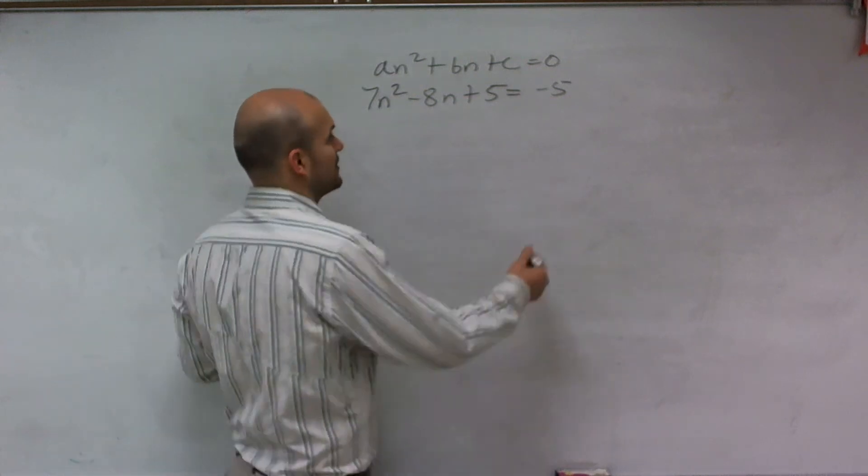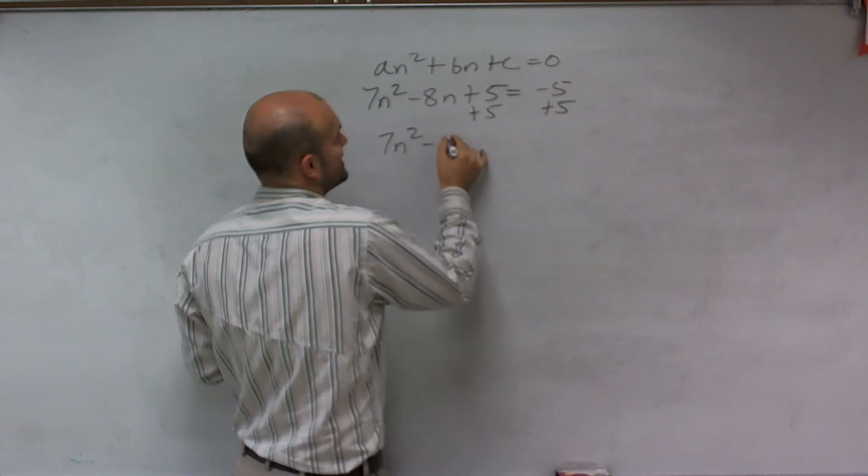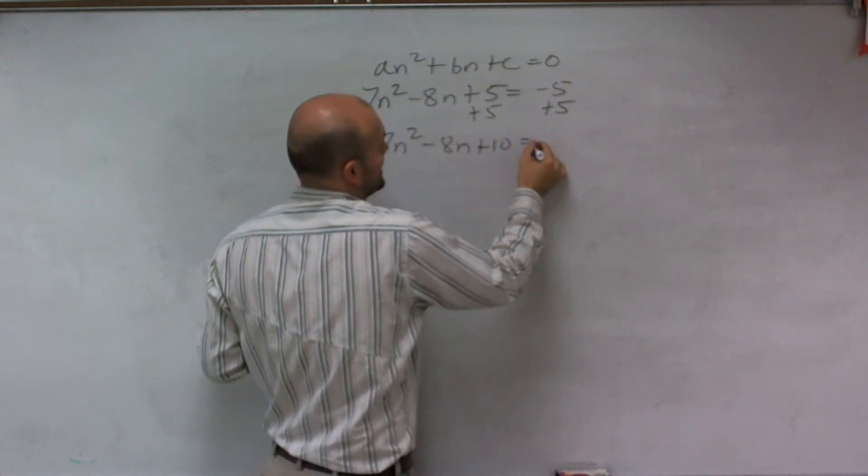We can't have it set equal to any other number, so the first thing I'm going to do is add 5 to the other side. So I have 7n squared minus 8n plus 10 equals 0.